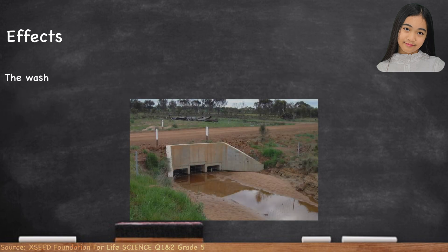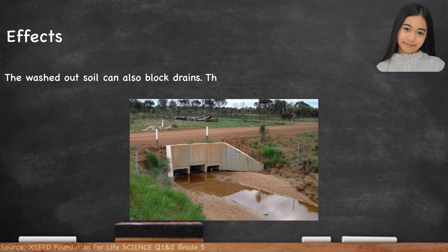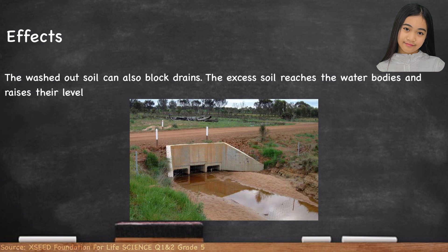The washed-out soil can also block drains. The excess soil fills up water bodies and raises their level, causing water to overflow onto the land.